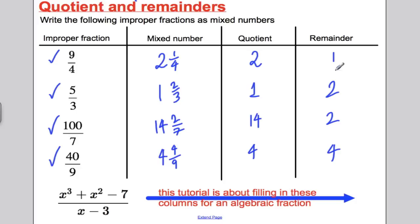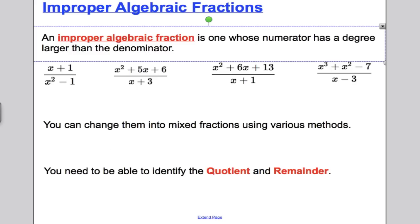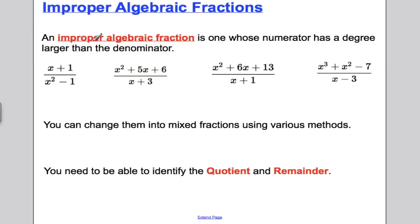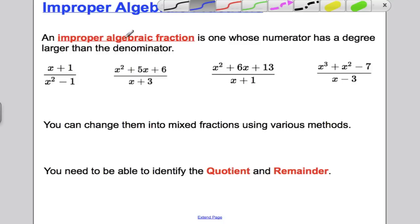The objective of this lesson is to do the same with improper algebraic fractions. We're going to try to write them as a result of a division and write down the quotient and remainder. An improper fraction is one whose numerator has a degree larger than the denominator — the top must have a higher order or degree than the bottom, i.e. its highest power of x.